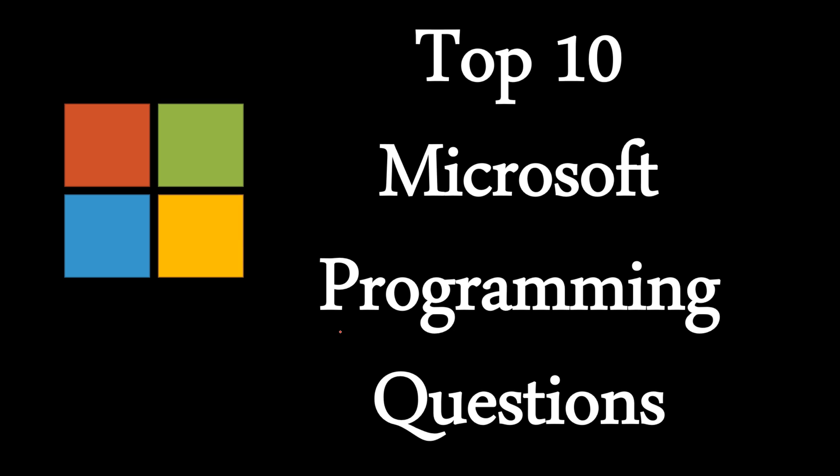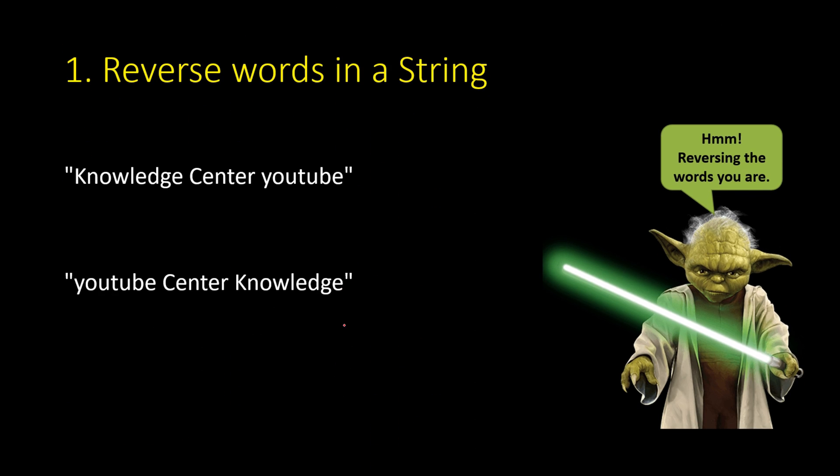What's up guys, let's see the top 10 Microsoft programming questions. The first question is reverse words in a string. If you have a sentence with three words like "Knowledge Center youtube", you should return "youtube Center Knowledge". It's like speaking the sentence with words in a reversed order.